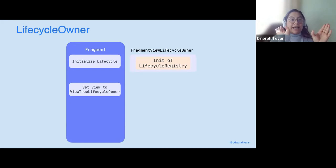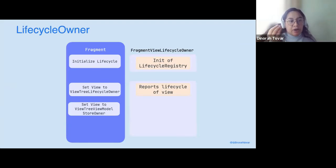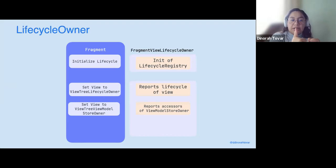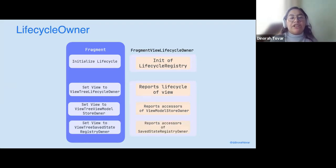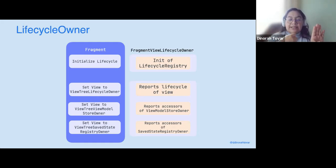A ViewTreeLifecycleOwner reports the lifecycle to the owner and gives feedback to the fragment. It always gives you the position you are in this huge map of lifecycles. It reports the last cycle of the view, and you will have a store owner. The store owner will track all the accessors of the ViewModelStoreOwner. It will give you the chance to collect all the observers and keep it inside of the fragment. The fragment will have all the traceability of the lifecycle and all the observers, and it will report state events to the lifecycle, which will then address the observers.